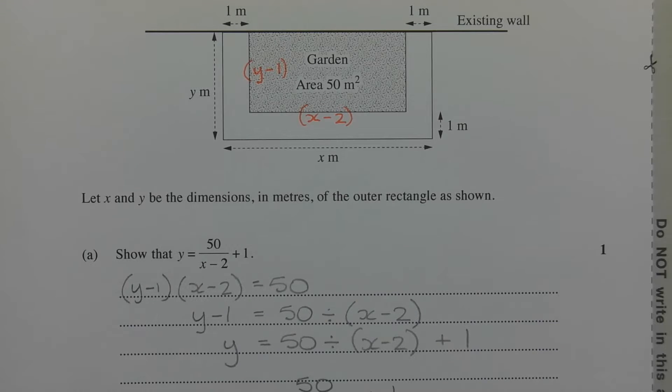Now the area of the garden bed, which is a rectangle, is found by multiplying the length by the width, or the width by the length. It doesn't matter which order. And that's written here. So the width, which is y minus 1, multiplied by the length, which is x minus 2. So notice it's in brackets. So y minus 1 in brackets times x minus 2 in brackets is equal to the area of 50 square meters.